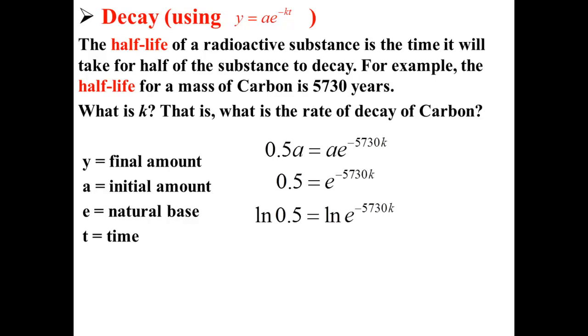Next, we take the ln of each side. Here, the ln allows us to bring down the exponent on the right side. ln and e also cancel out. So this leaves us with ln 0.5 is equal to negative 5,730 k.